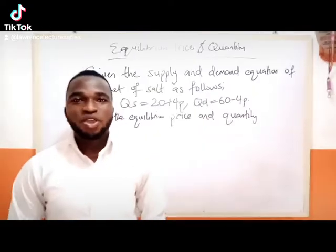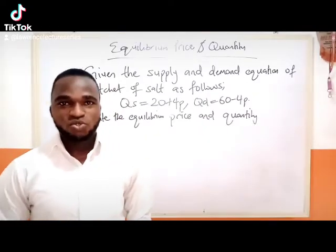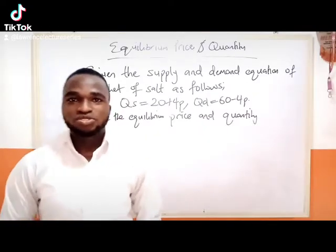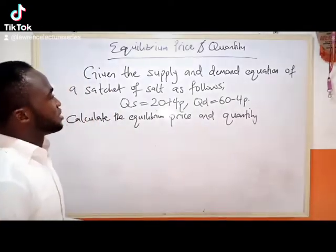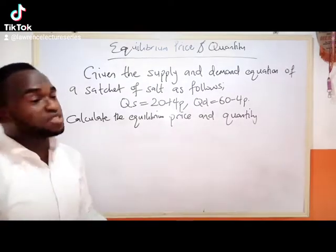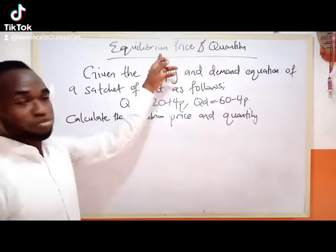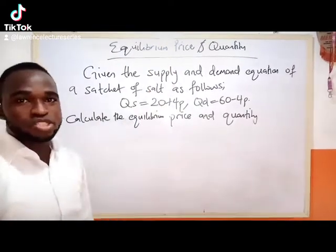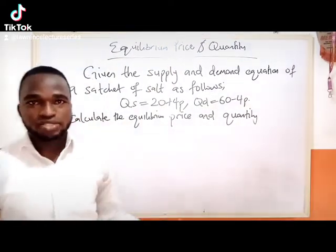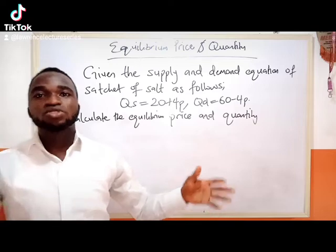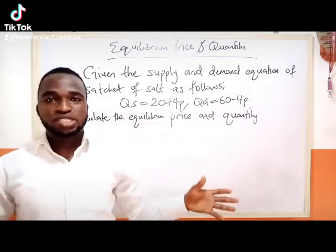Hello viewers, welcome to another episode on Lorentz lecture series. Today we are looking at a question that borders on equilibrium. What is equilibrium? Equilibrium is a state of balance where two different things meet.